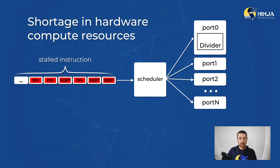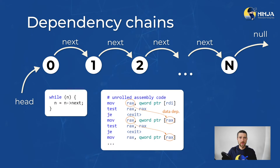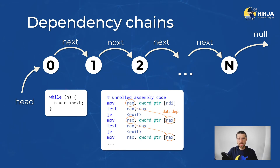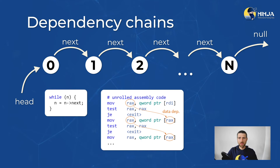The second type of problems in the core-bound category is dependencies between instructions, also known as dependency chains. The simplest example here could be traversing a linked list, also known as the pointer chasing problem. If we set aside all the potential issues with memory accesses, and suppose that all the elements of our list are allocated close to each other, it still presents a dependency chain. We cannot load element N until we load all the previous elements. It is a sequential algorithm by design, and the CPU cannot magically run it in parallel. Modern CPUs can issue dozens of memory operations in parallel, but not in this case.